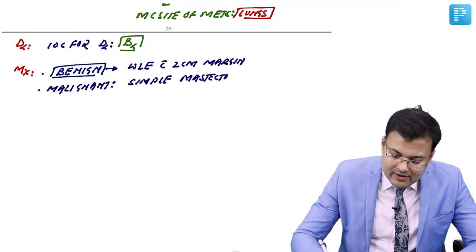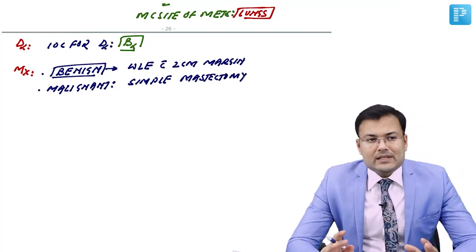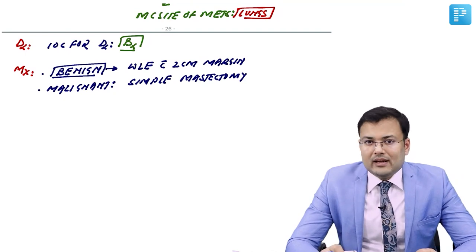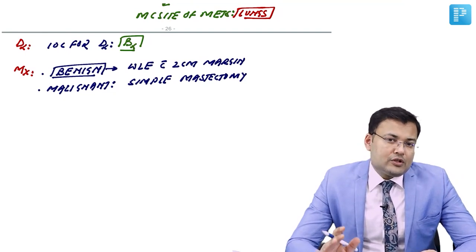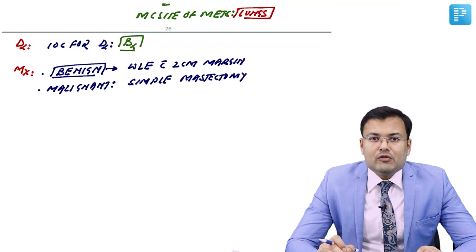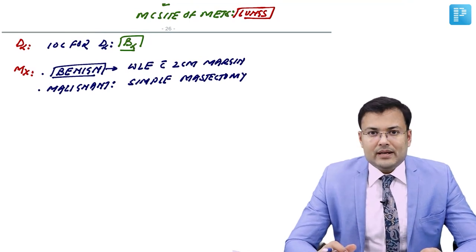Modified radical mastectomy (MRM) should not be done in cystosarcoma phyllodes because there is no lymph node involvement and no lymphatic spread. In sarcomas, there is no lymphatic spread.